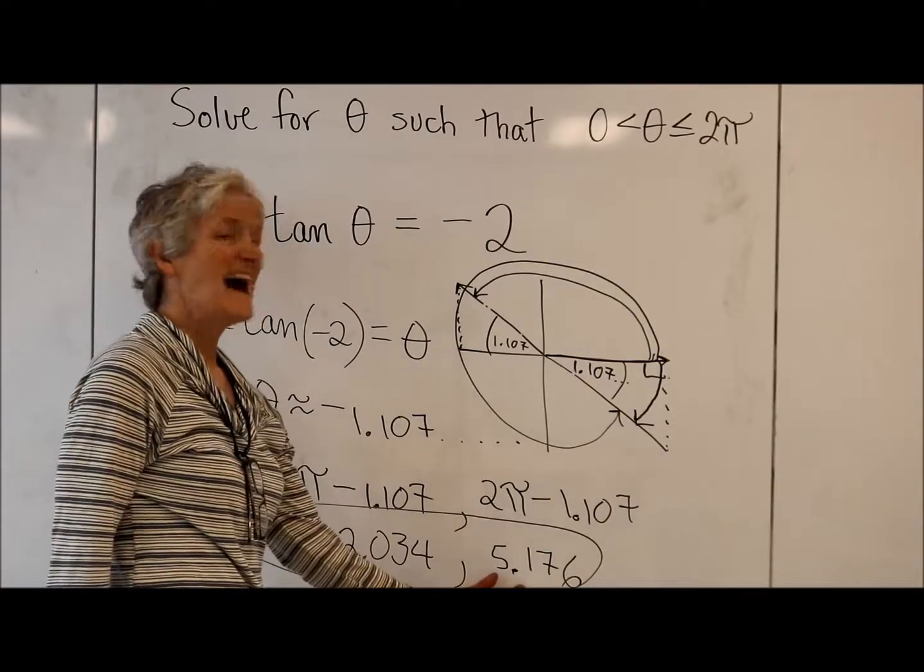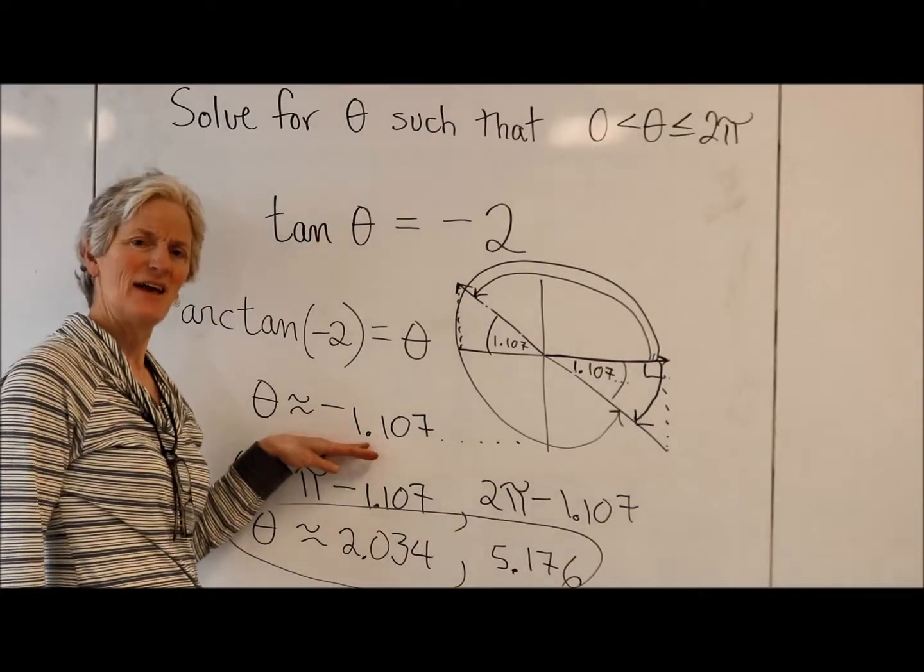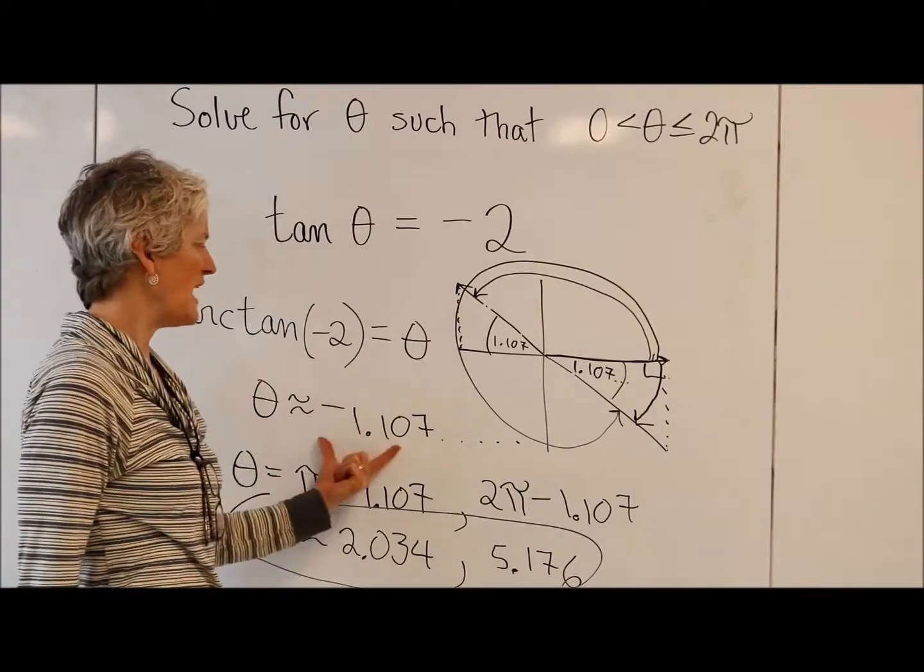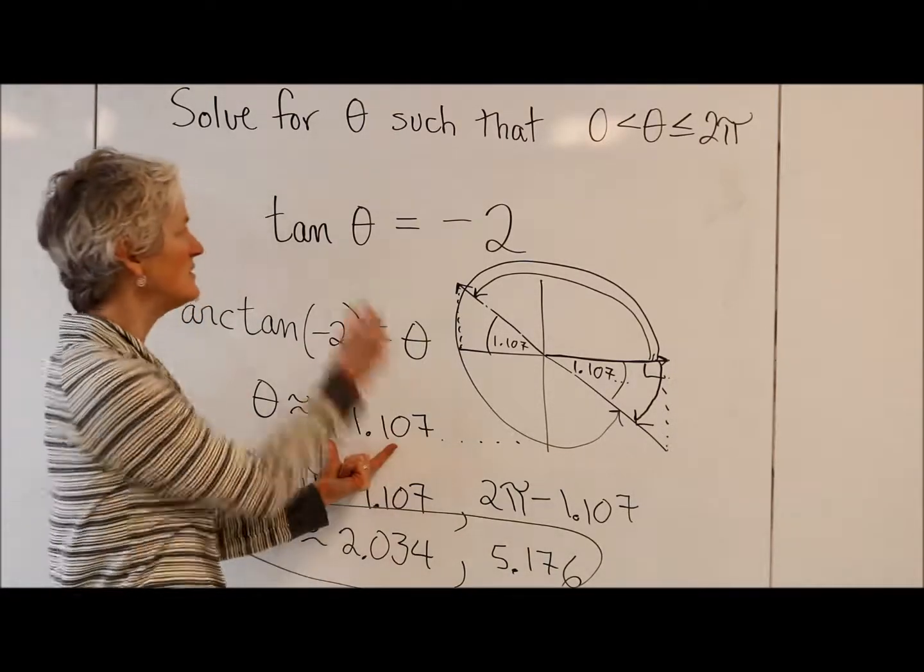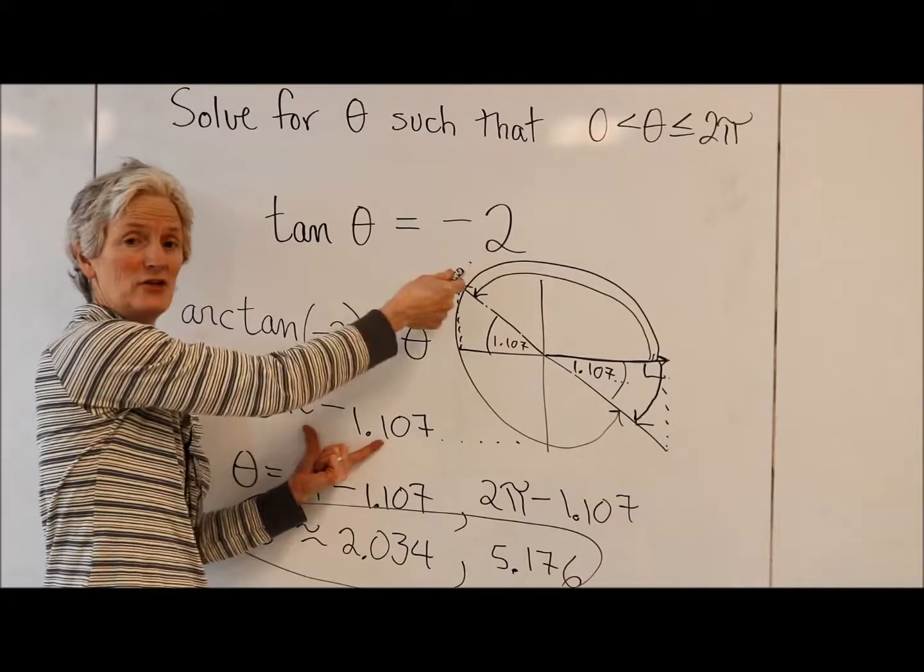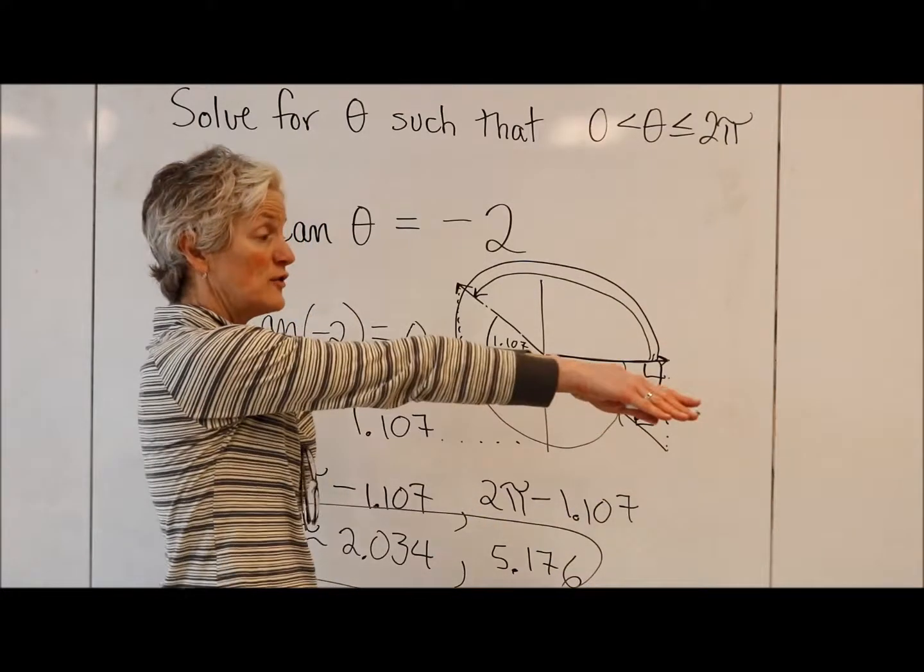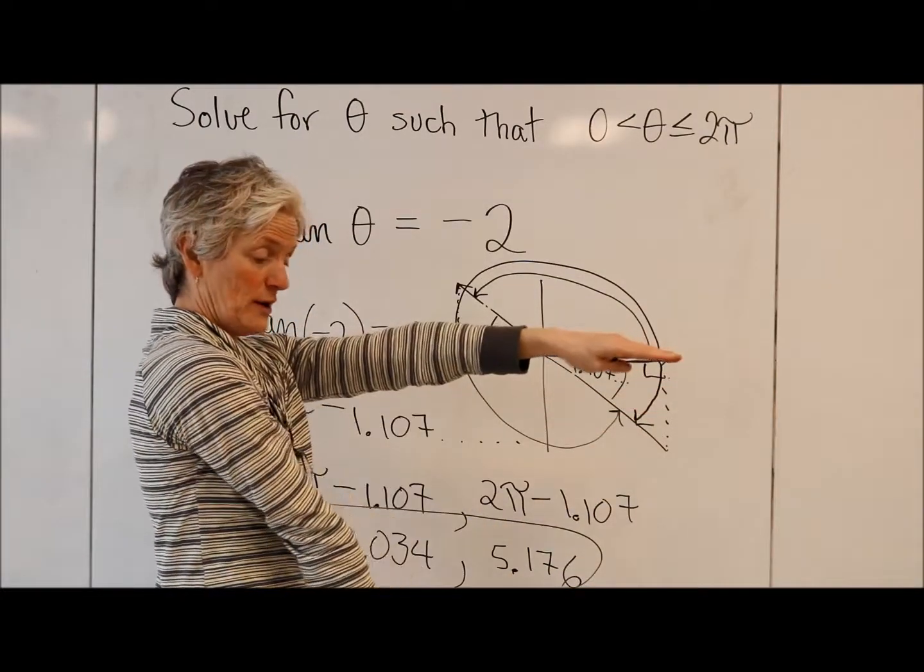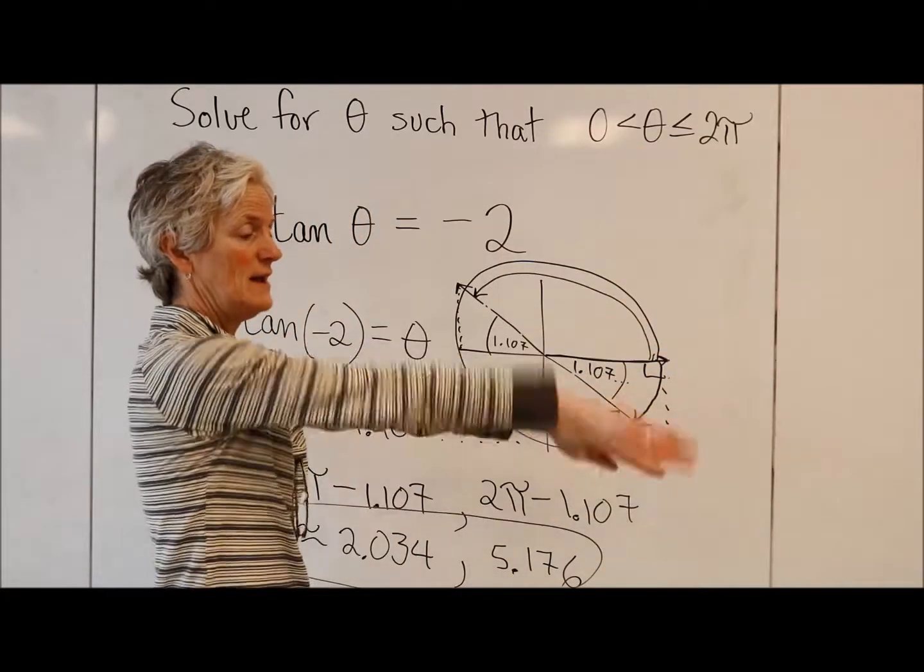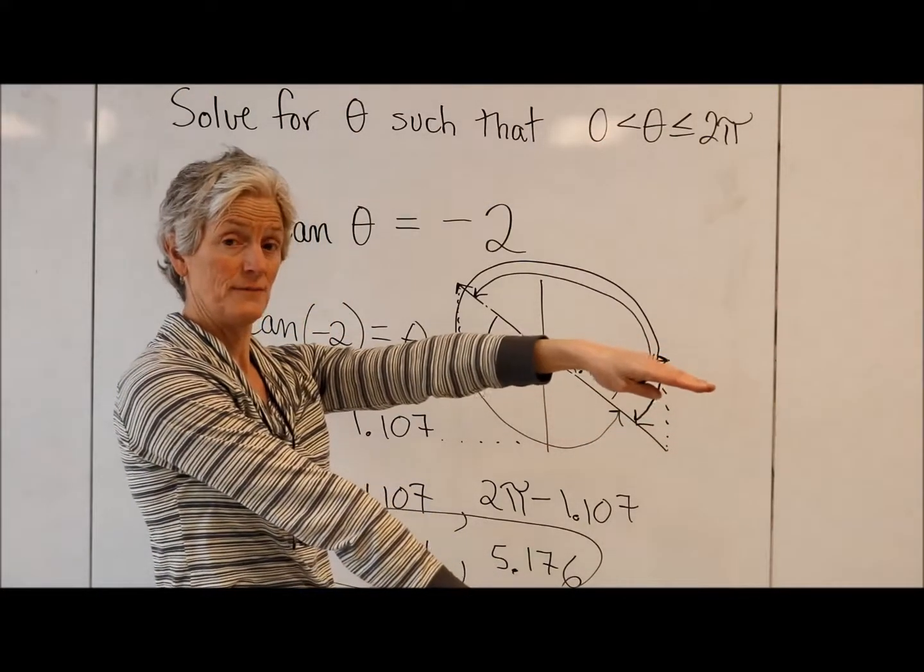Now, look what is not on my answer. The thing that the calculator gave me is not in my answers. Why not? Did the calculator lie? Is that not really a solution to this equation? Well, this is a solution to the equation, but it's not a solution in the domain that I wanted to find my solutions for. So sure, negative 1.107 radians is a solution to this equation, but it's not between 0 and 2 pi. So that angle I got by rotating in the positive direction. Is that making sense?